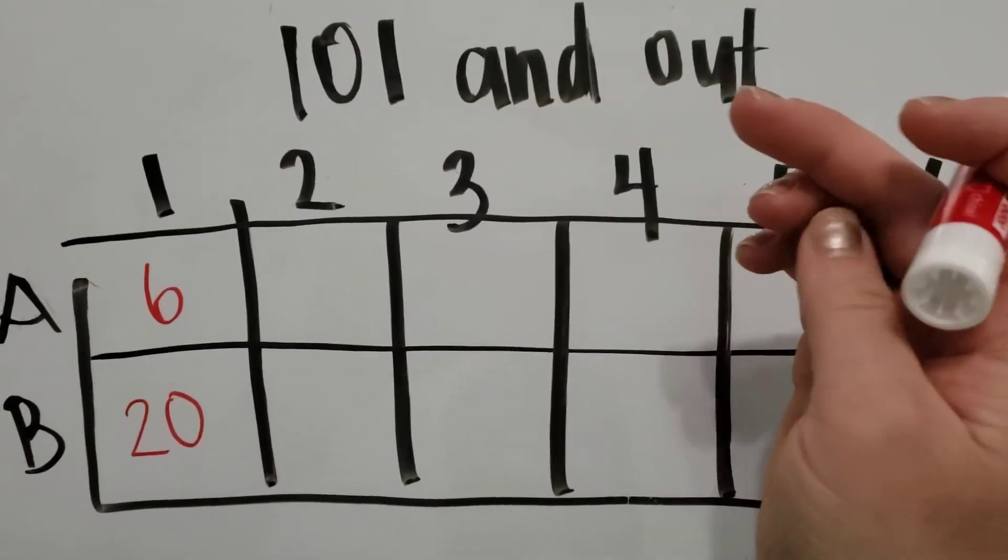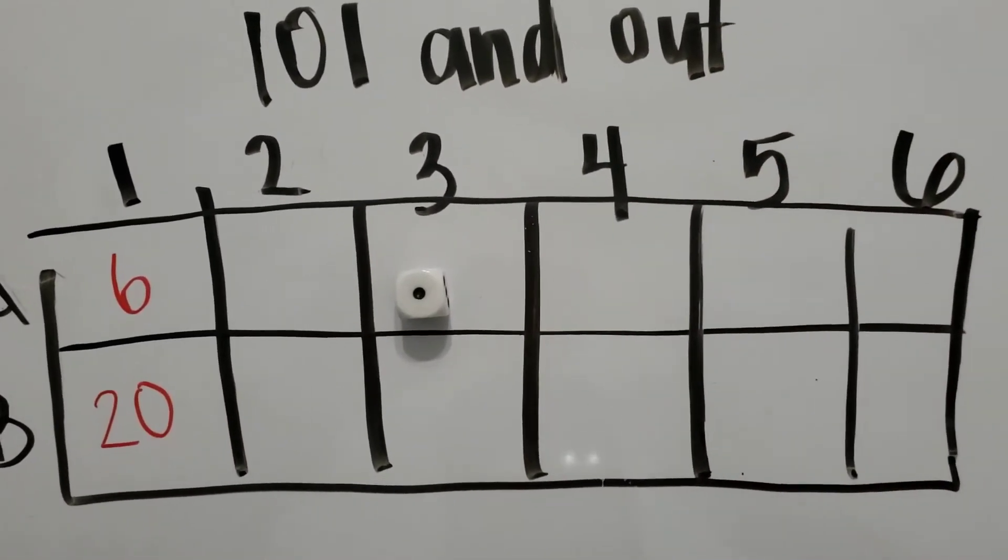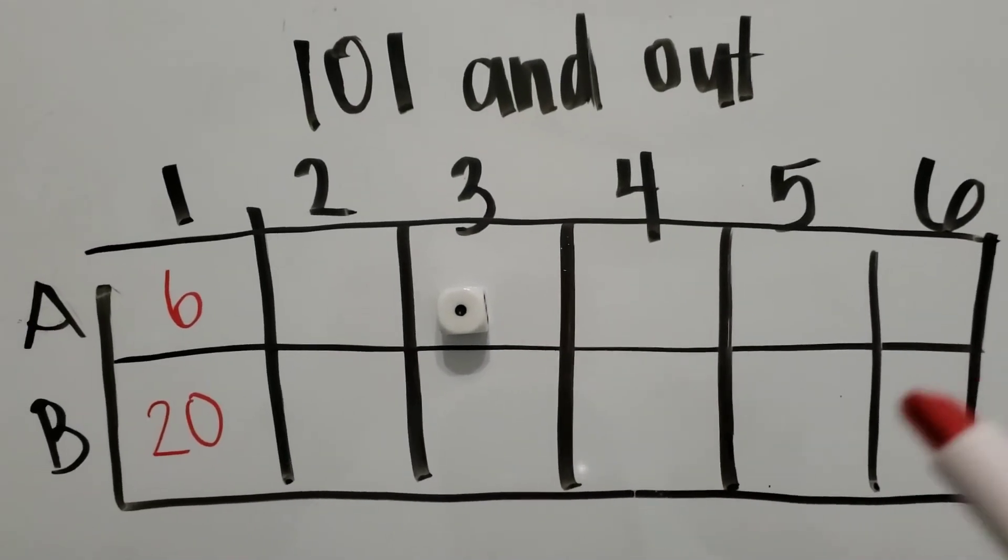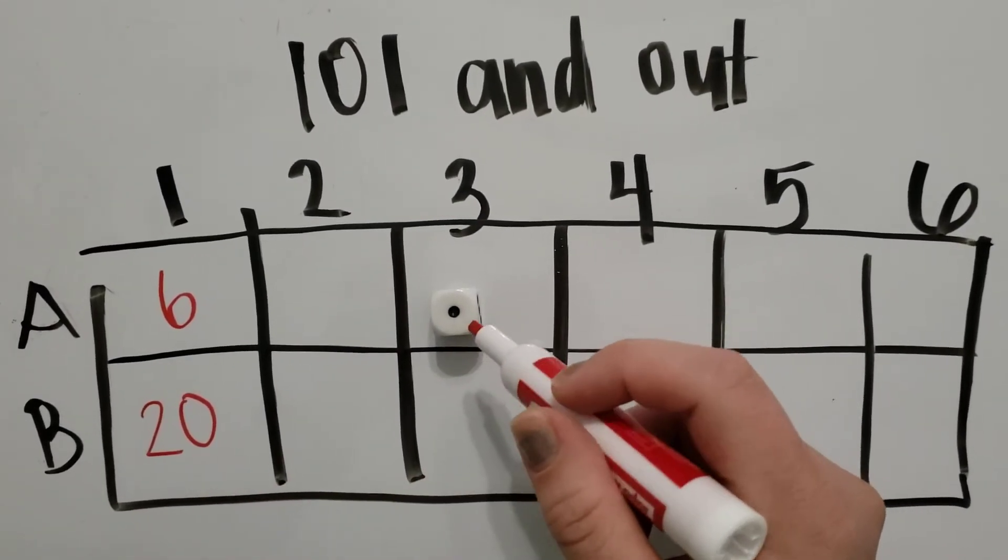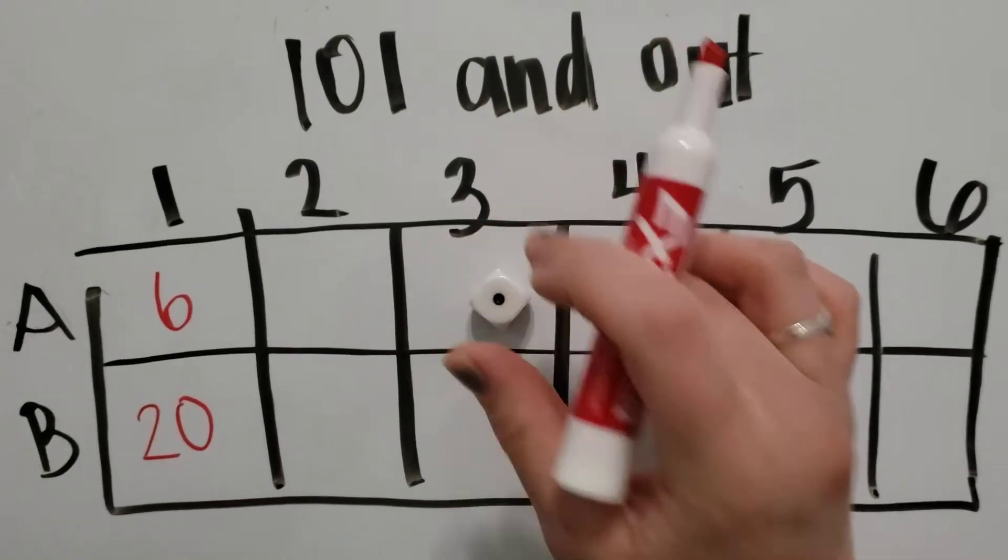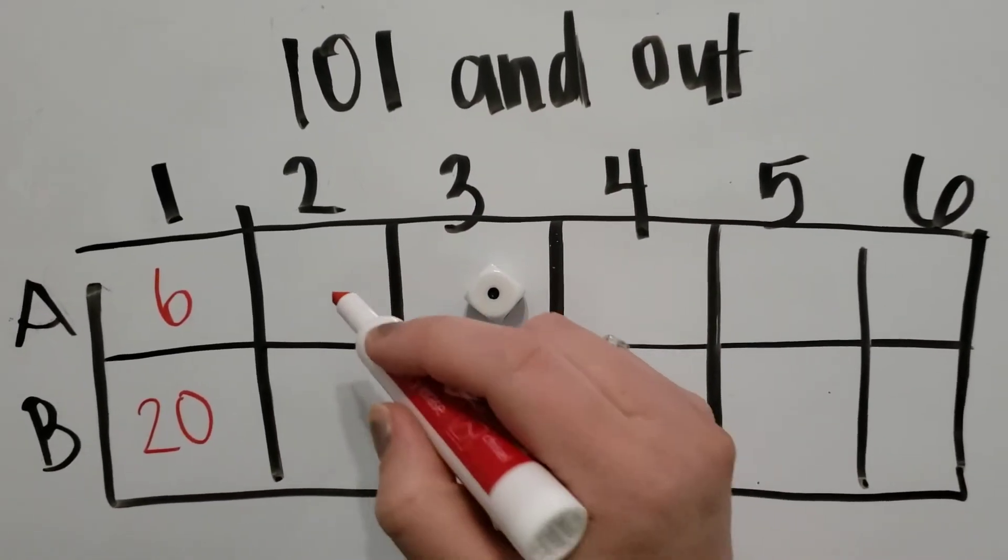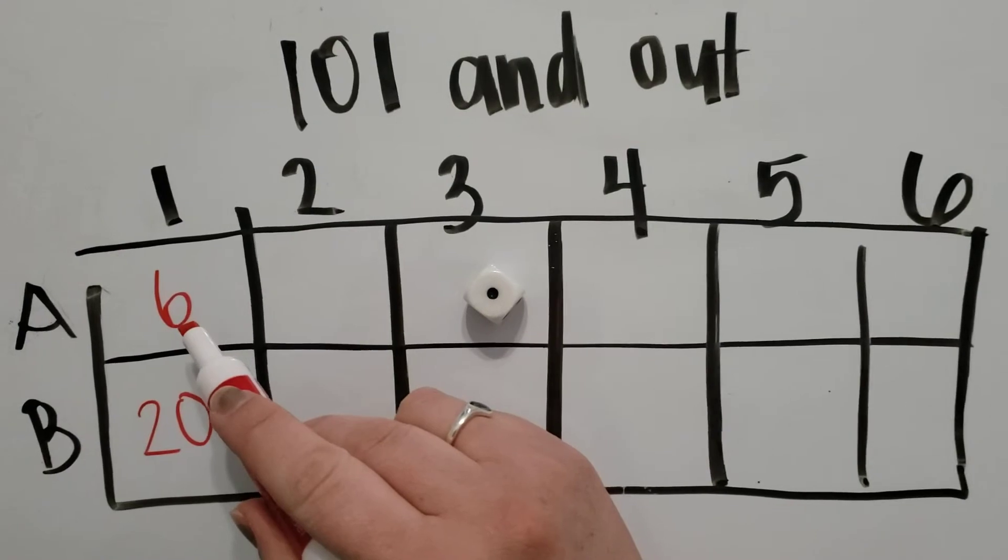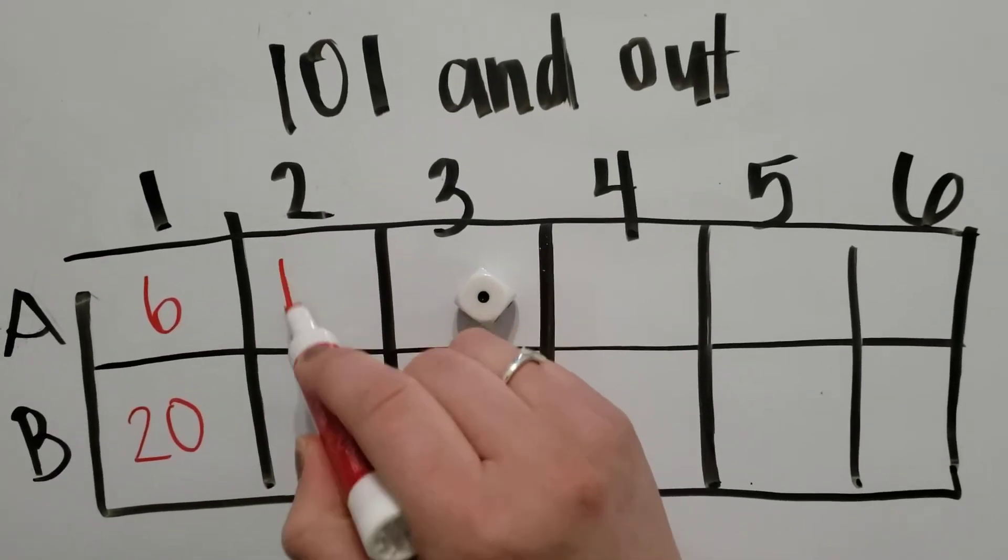Then player A would roll the dice and they rolled a one. Now, they only have six. And so they can choose one or 10 because it's a one. I'm going to choose a 10. So six plus 10 is going to be 16.